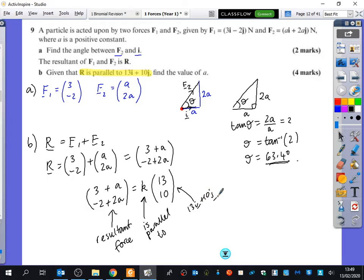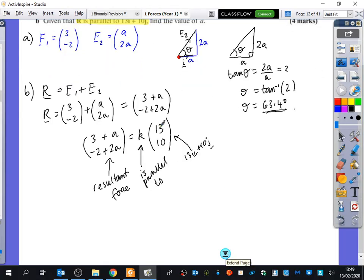It doesn't mean that it's equal to 13I, 10J. It means it is parallel to it. So when I actually go ahead and try and work this out, I'm going to just multiply. So I get 3 plus A, minus 2 plus 2A, is equal to 13K, 10K. And then what do I do next?